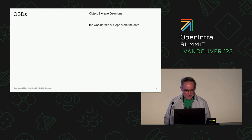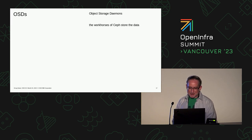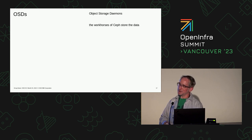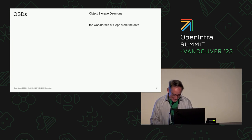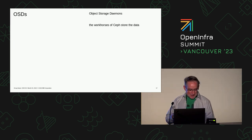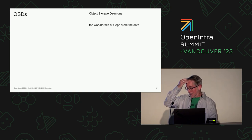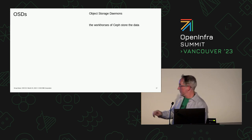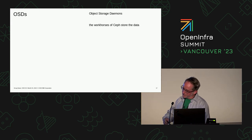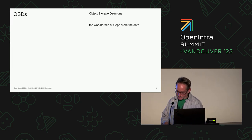OSDs are the Object Storage Daemons — the workhorses of Ceph. These are the things running on all the nodes that actually do the storage. That's a gross oversimplification, but I did promise you a bird's eye view. I'm skipping over other back-end parts of Ceph, namely the monitors and librados — that was the skinny little blue part in the architecture diagram — which is the library that lets applications talk to Rados.